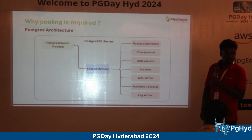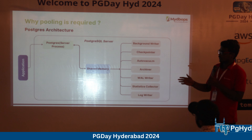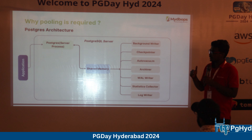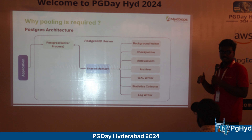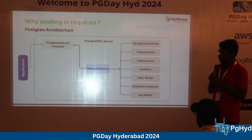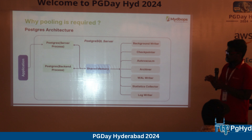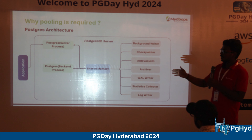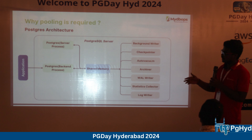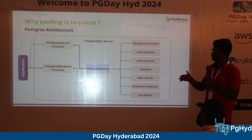The advantage of having a connection pool is that it limits connections to the database. Instead of sending hundreds of connections directly, only a limited number hit the database. The overhead of connection creation and destruction — which consumes CPU and memory — is greatly reduced by offloading it to the pooling layer, freeing database resources for other purposes.